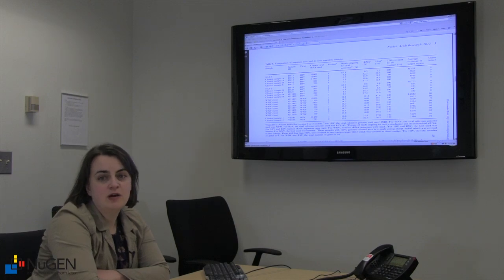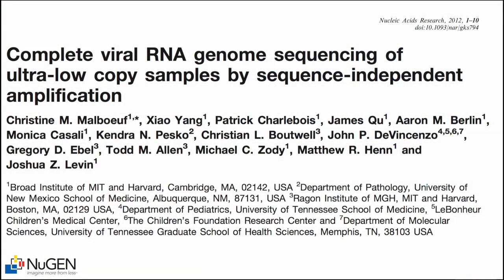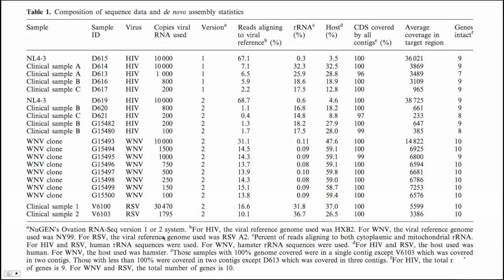This is a table from a paper we recently published. It contains our data on three different viruses: HIV, West Nile, and respiratory syncytial virus — including both clone and clinical samples. We have input amounts ranging from tens of thousands down to a few hundred copies of viral RNA. The table shows the percent of reads aligning to the viral reference, the percent of ribosomal RNA, the percent of host RNA, and the percent of the viral coding region covered.